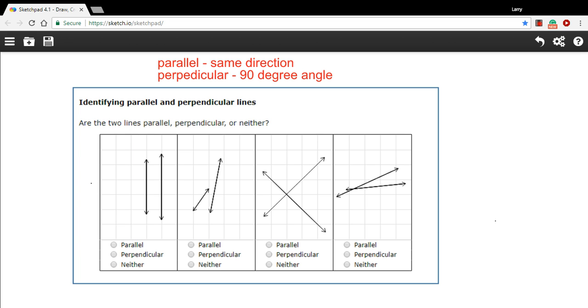So let's take a look at these questions here. Here's the first one. And you can see these two lines run in exactly the same direction, straight up and down. So those are parallel.